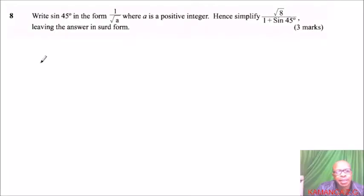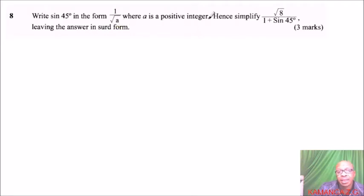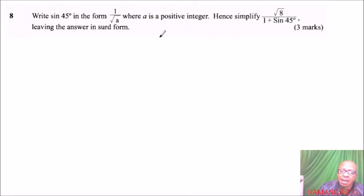Question number 8. Express sine 45 degrees in the form 1 over root a, where a is a positive integer. Hence, simplify root 8 over 1 plus sine 45 degrees, leaving your answer in surd form.